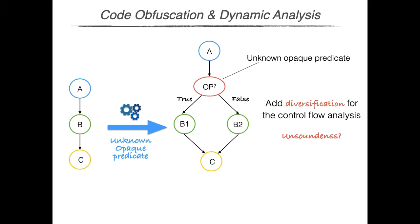Following this idea, we could say that the key to complicating dynamic analysis is diversification. Diversifying the code with respect to the input values would force the dynamic analysis to consider a wider set of traces in order to be sound. At the limit, if we have a different specialized version of the code for every input, dynamic analysis should consider all possible inputs in order to be sound, which is generally unfeasible.